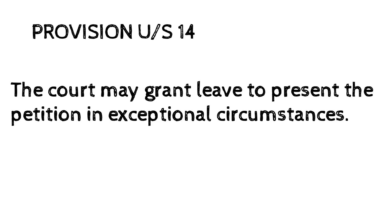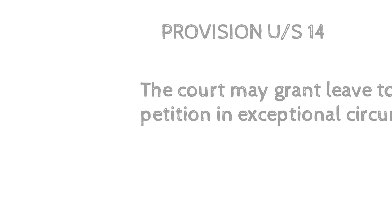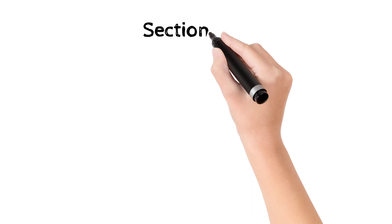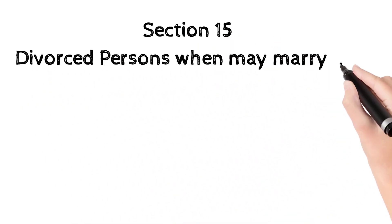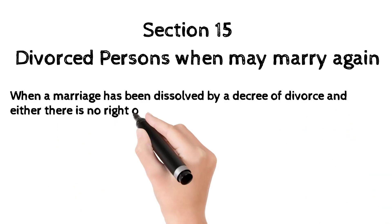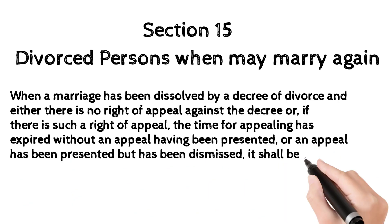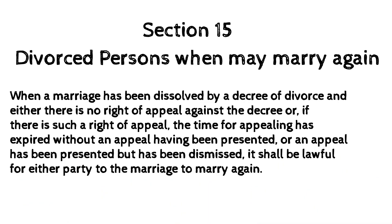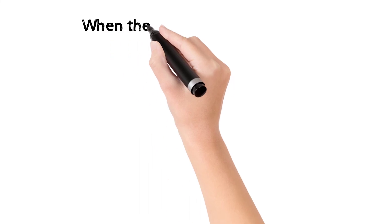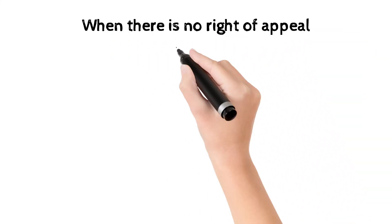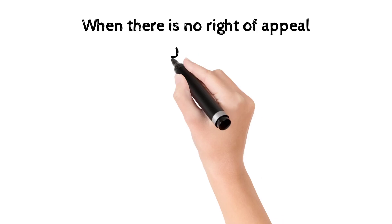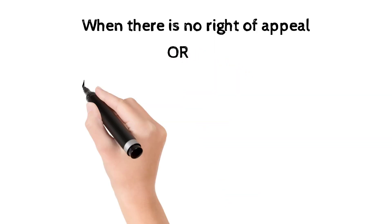Next we have Section 15, which deals with when a person can remarry. Section 15 says that when a marriage has been dissolved by a decree of divorce and either there is no right of appeal against the decree, or the time for appealing has expired without an appeal being presented, or an appeal was presented but has been dismissed, then either party may remarry.